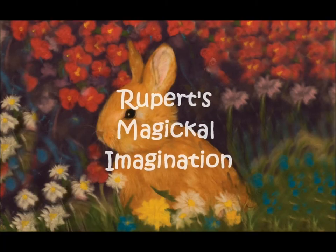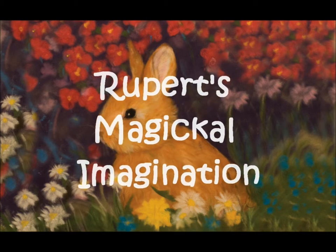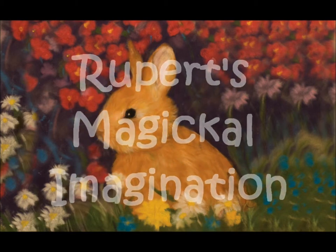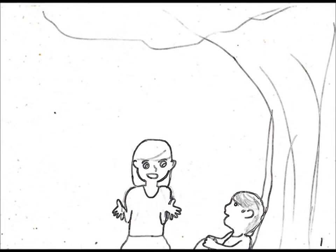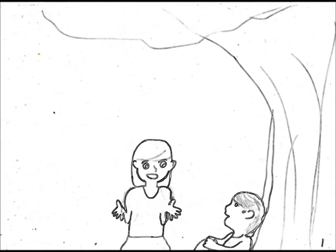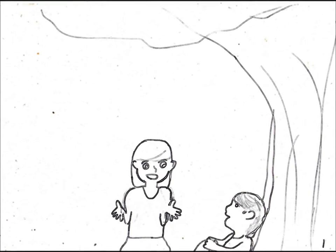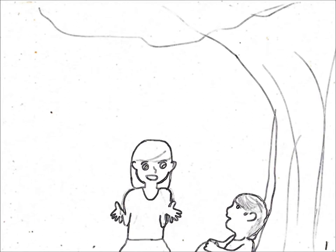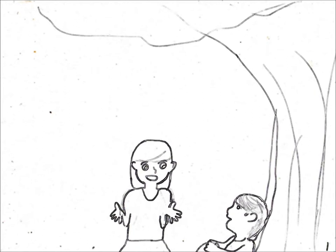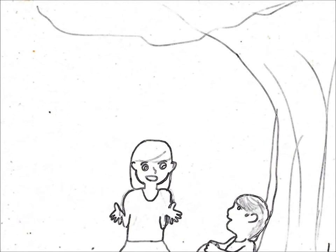This story is called Rupert's Magical Imagination. And here's how it goes. Rupert the Rabbit sat very quiet, very still, hiding behind a big tree on the top of a hill. This was his tree, his hill, his very own special place, right next to a meadow that was a round kind of space.